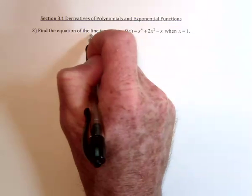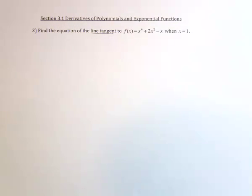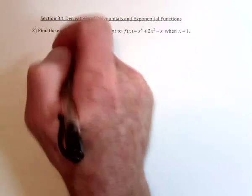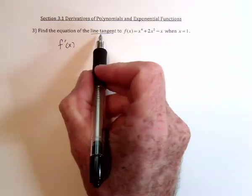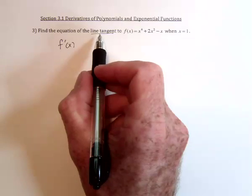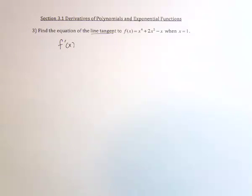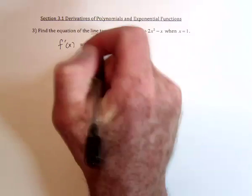Whenever it talks about a tangent line or slope of a tangent line, tangent is a keyword saying find the derivative. The derivative will give us the slope of this line. Then we can use the point-slope formula to find the equation of it.